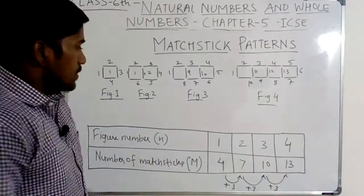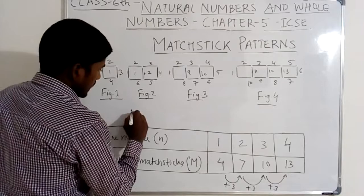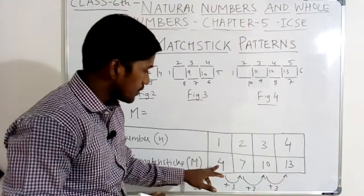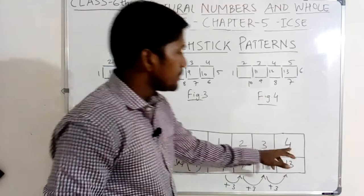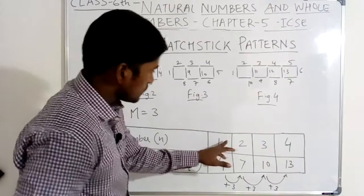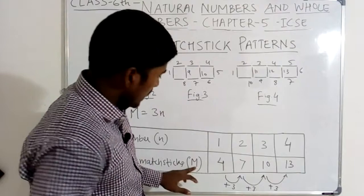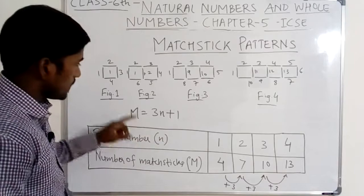So let's find the formula. M equals three into one plus one equals four. Three into two equals six, plus one equals seven. Three into three equals nine, plus one equals ten. Three into four equals twelve, plus one equals thirteen. So three into n — three n. Plus one equals M. So three n plus one equals M, where n is the figure number.